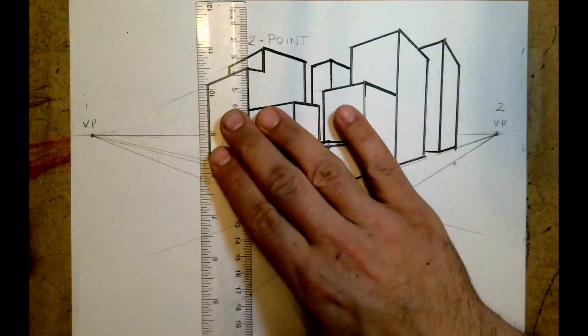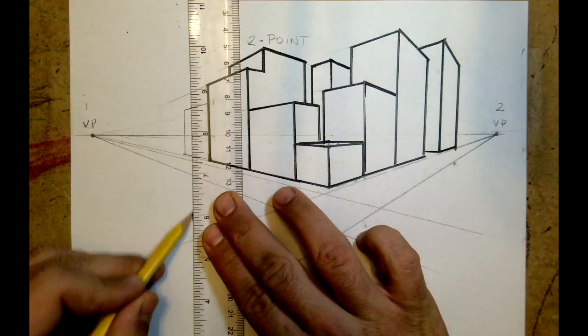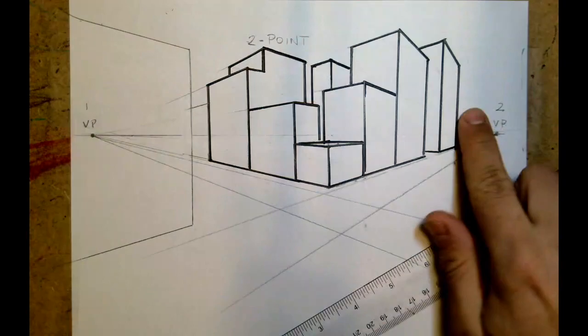What I'm going to do now is I'm going to place an additional building here. I'm going to draw a large building up close that's across the street from that group of buildings.